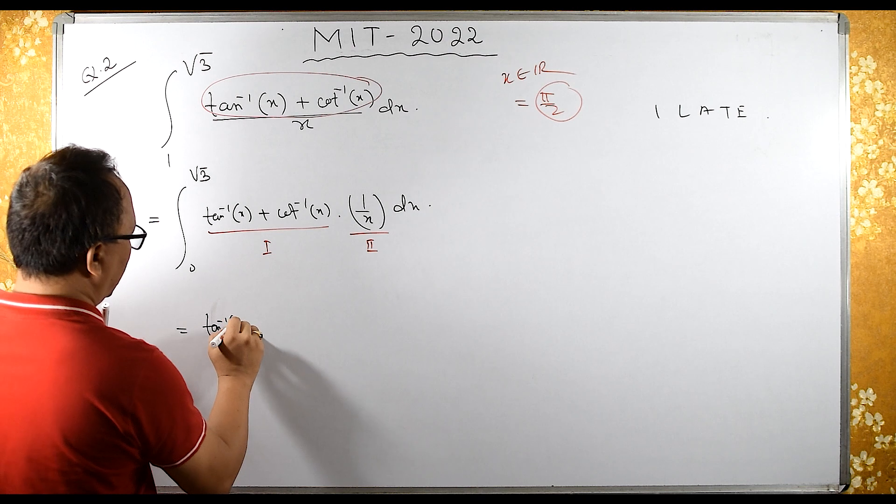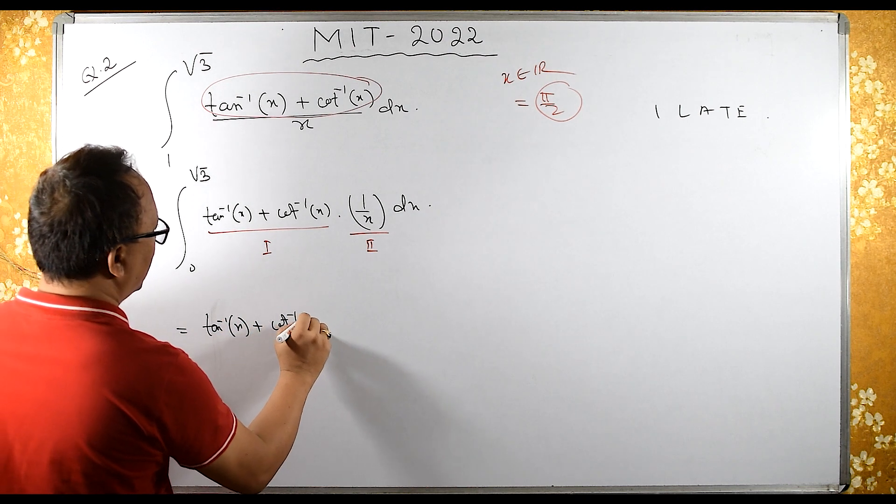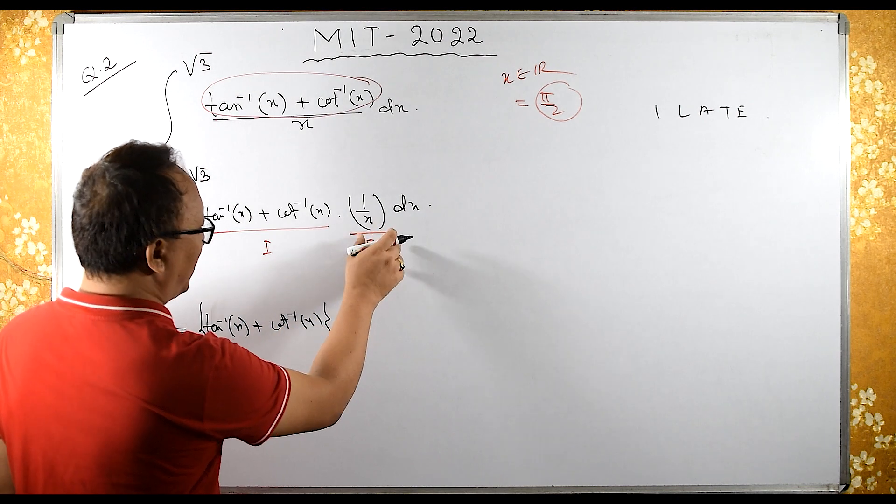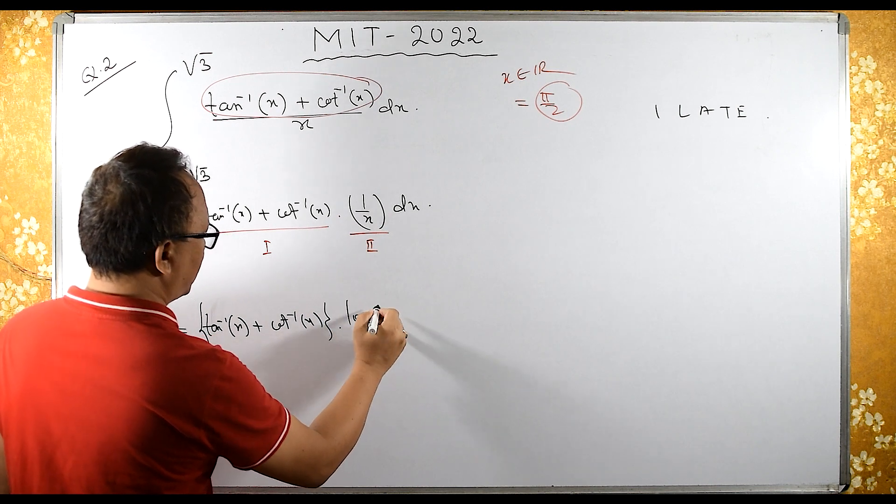So let's apply the formula: tan inverse x plus cot inverse x times the integral of the second function, which is log of x.